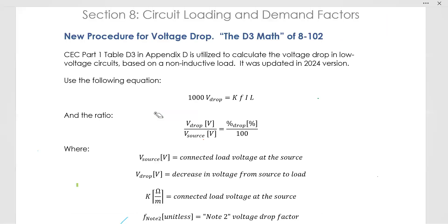You're going to comment below if you would like me to do a bunch of example problems for this in another video. In order to solve voltage drop problems for the Canadian Electrical Code Section 8, 8-102 voltage drop rule, you simply use this equation: 1000 times voltage drop equals factor K times factor F times current times length.